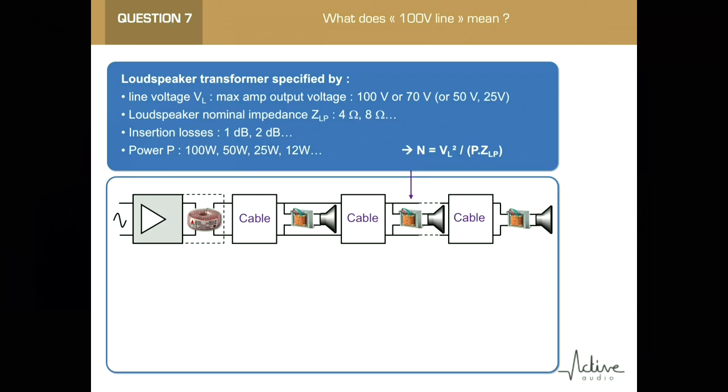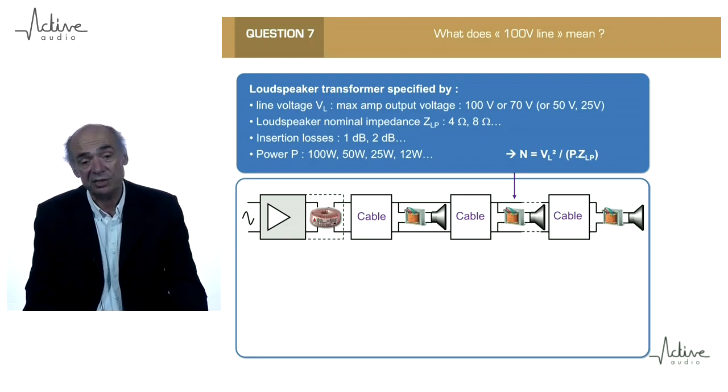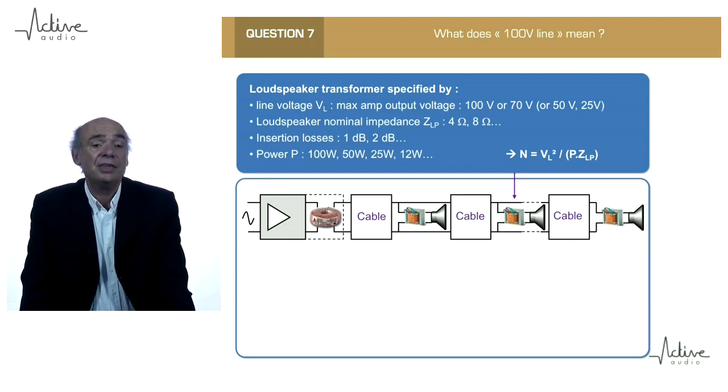For example, here, an amplifier is connected to a transformer, increases the line voltage, and then there are a daisy chain of loudspeakers connected with cables.